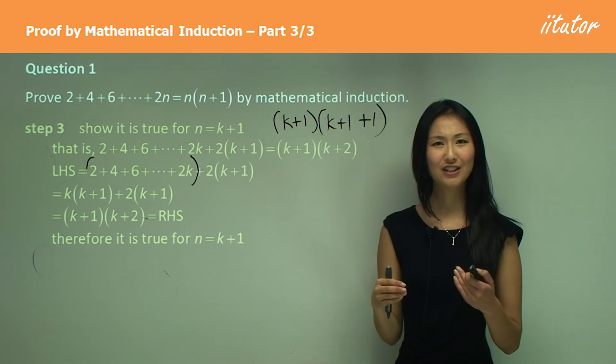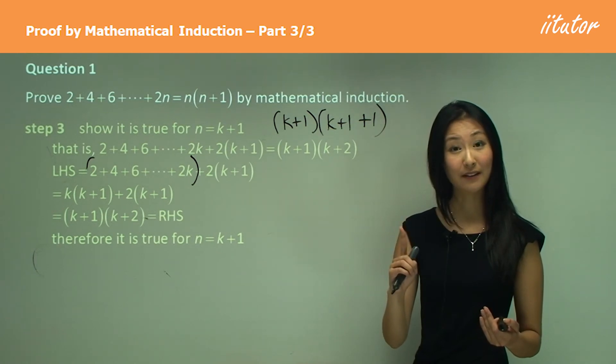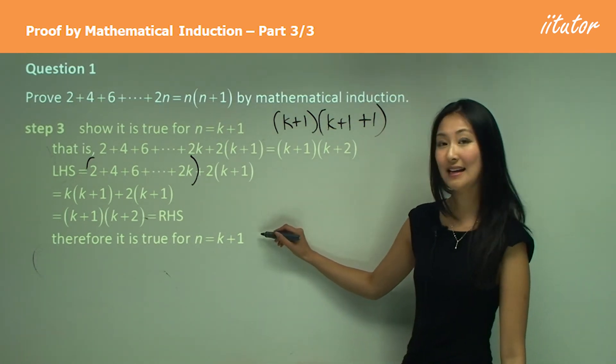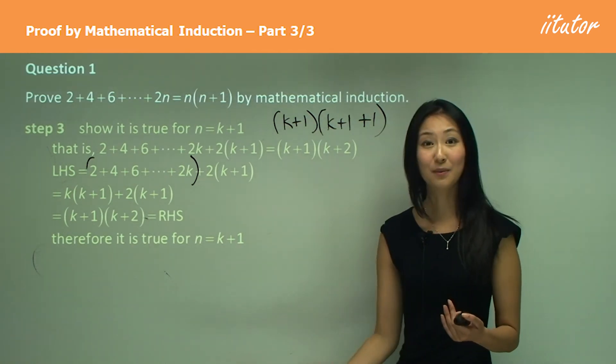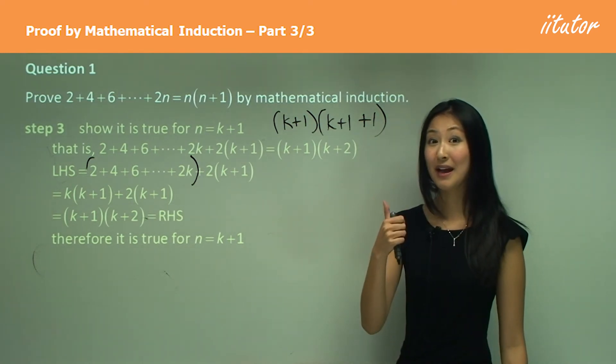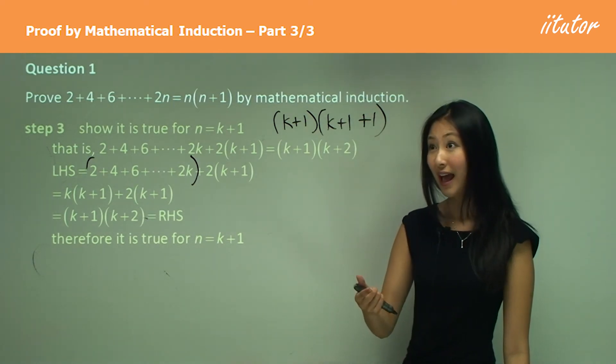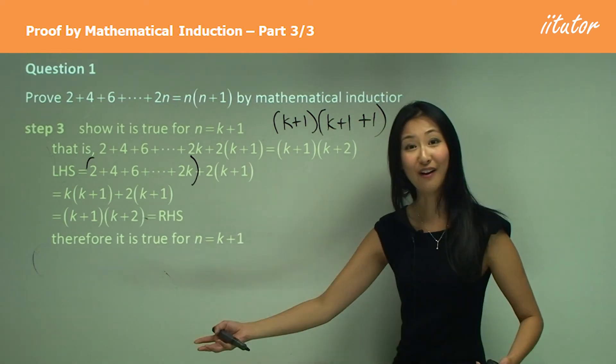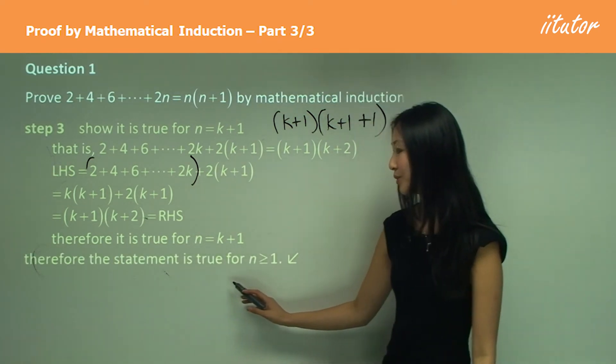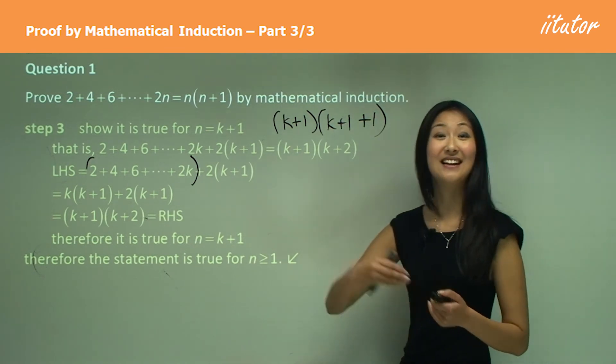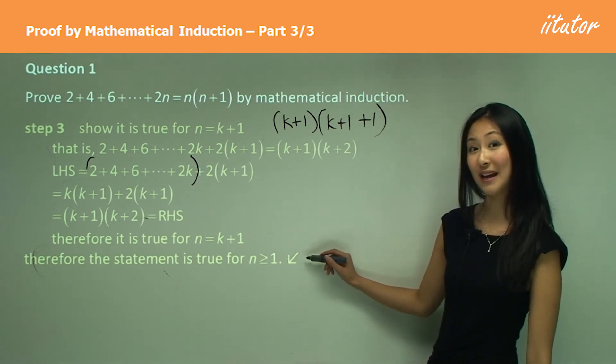Now, I want you to consider what have we actually done in all these steps? Well, in step 1, we proved that it's true for n equals to 1, didn't we? And now we've proved that n is true for n equals to k plus 1. That is, any number plus 1. So we've actually proved that n is true for n equals to 1. And when k equals to 1, n is true for 2, and also true for n equals to 3 and 4 and so on. So therefore, we can make the conclusion that the statement is true for n equals to 1 as well as any number greater than that, haven't we? So we can just simplify that to n is greater or equals to 1.